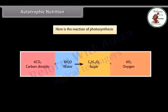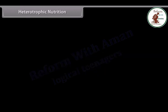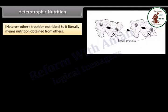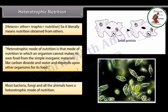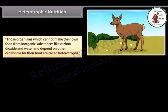Here is the reaction of photosynthesis. Heterotrophic nutrition: 'heterotrophic' literally means nutrition obtained from others. A heterotrophic mode of nutrition is that mode in which an organism cannot make its own food from simple inorganic materials like carbon dioxide and water, and depends upon other organisms for its food. Most bacteria, fungi, and all animals have a heterotrophic mode of nutrition. Those organisms which cannot make their own food from inorganic substances and depend on other organisms are called heterotrophs.